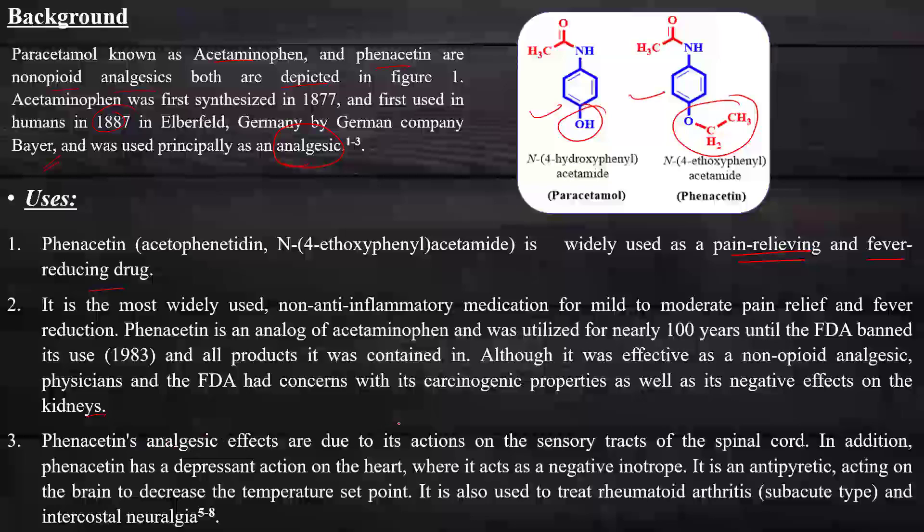Phenacetin's analgesic effects are due to its action on the sensory tract of the spinal cord. In addition, phenacetin has a depressant action on the heart where it acts as a negative inotrope. It is antipyretic, acting in the brain to decrease the temperature set point, and is also used to treat rheumatoid arthritis and intercostal neuralgia.